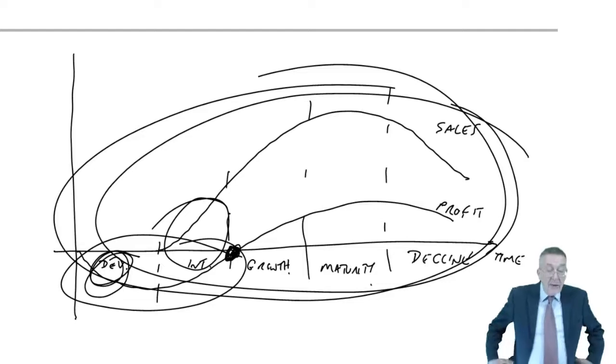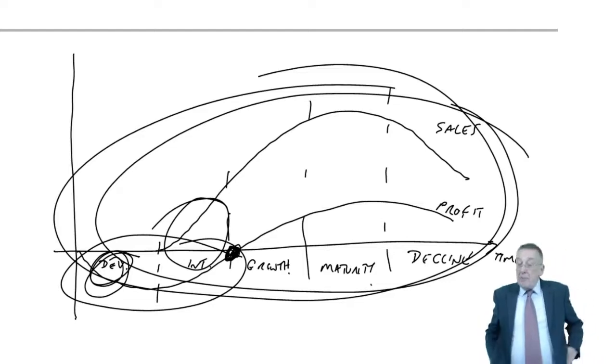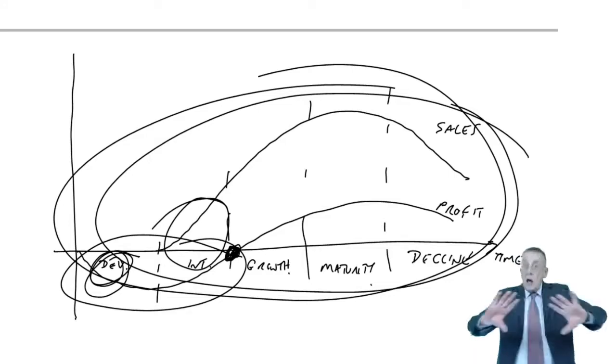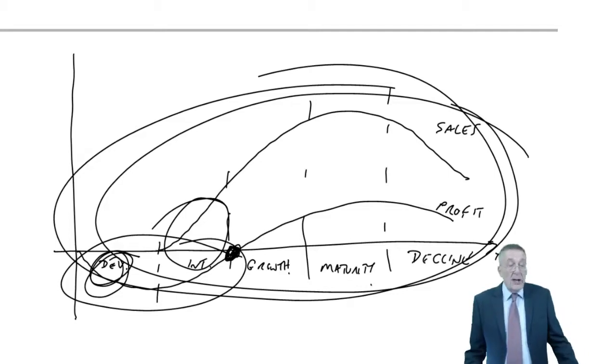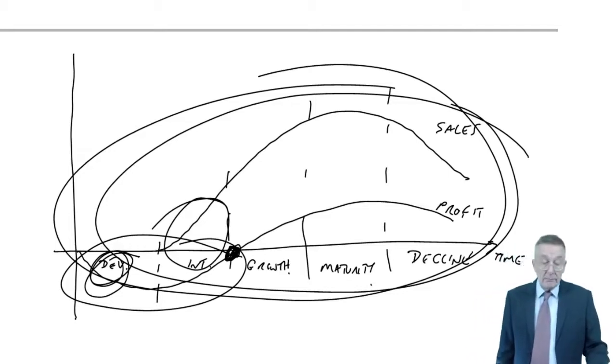And finally, maximize the length of the life. It may obviously be out of our control. Think of what I said about televisions. But the longer we can keep our product selling, the longer we can keep the maturity phase, then clearly the more profitable the product's going to be.